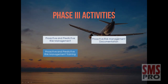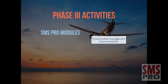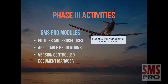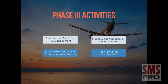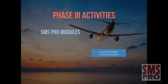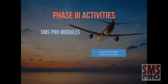Maintaining documentation relevant to proactive and predictive risk management processes. As identified in Phase 1, the following modules persist your SMS documentation needs: the Policies and Procedures Module, the Applicable Regulations Module, and the Version-Controlled Document Manager. Maintaining means for safety communication — the modules identified in Phase 1 and Phase 2 continue to provide the means to achieve this.